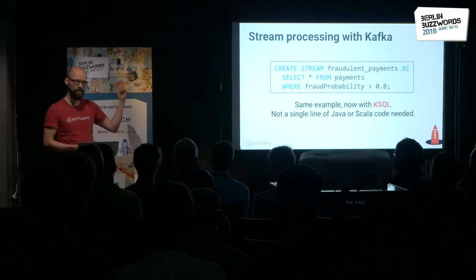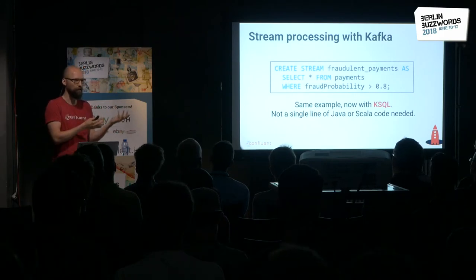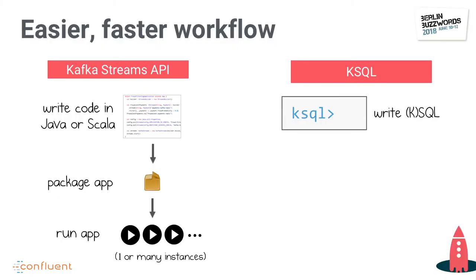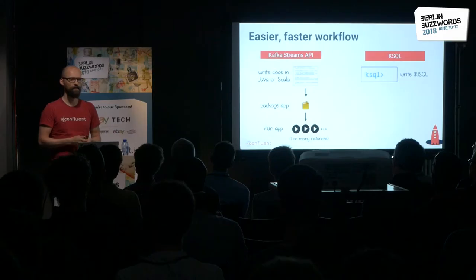With KSQL, all of those lines of code collapse down to this single SQL statement. You don't need to write any Java or Scala code, and you don't need to embed SQL statements inside some other application. One of the nice things is that you have a much faster and more interactive workflow. With Kafka Streams, you write code, compile it, package it, deploy it — versus with KSQL, you just write your statement and that's it. This is great if you have an idea at lunchtime and want to iterate quickly. We've also seen it used by SREs to investigate why a message wasn't processed.